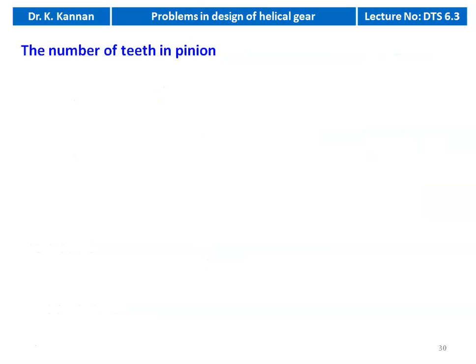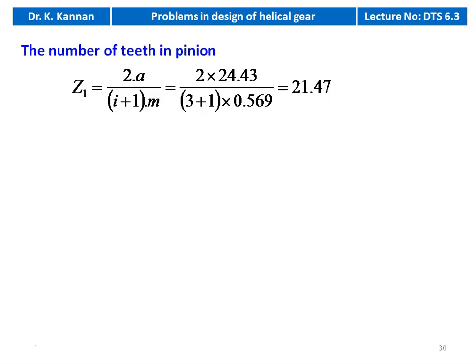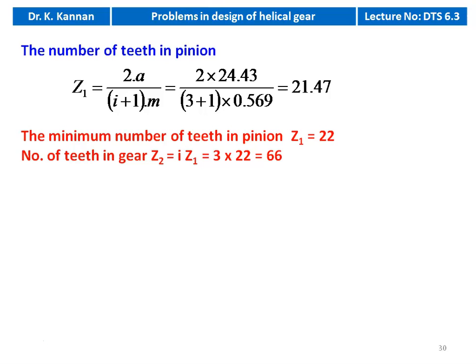Module m = mn / cosβ = 0.55 / cos15° = 0.569 cm. Axial pitch Pi = π × mn / sinβ = 3.14 × 0.55 / sin15° = 6.67 cm. Number of teeth on pinion: Z1 = 2A / [(i+1) × m] = 2 × 24.43 / [(3+1) × 0.569] = 21.47, so we take Z1 = 22. Number of teeth on gear: Z2 = 3 × 22 = 66.